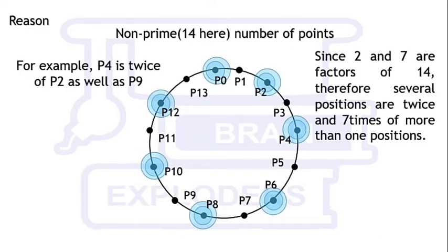Since 2 and 7 are factors of 14, therefore several positions are twice and seven times of more than one positions. For example, P4 is twice of P2 as well as P9.